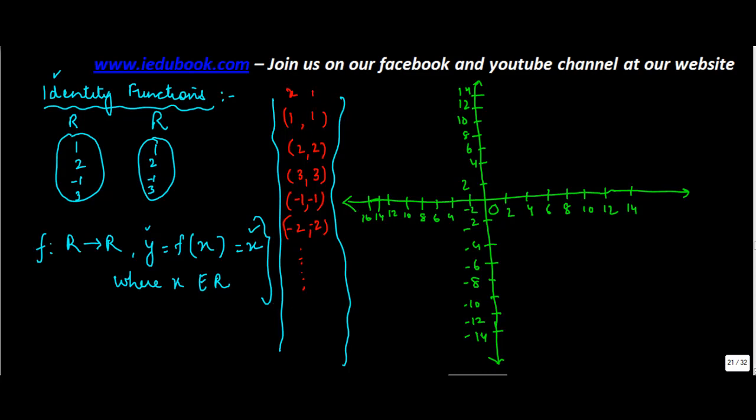Now if you plot these points on the graph, let's call this as y axis, x axis. So you have x is equal to 1, y is equal to 1. So x is equal to 1 lies here, y is equal to 1 lies here. So this point should be somewhere over here. This will be (1, 1).